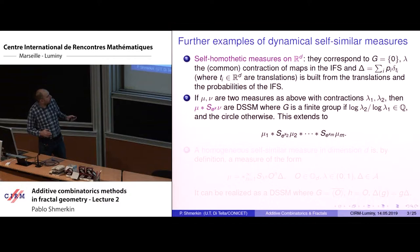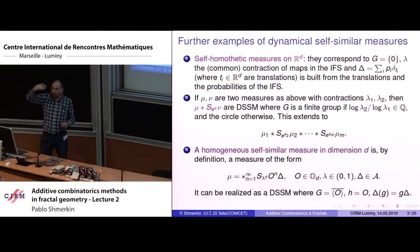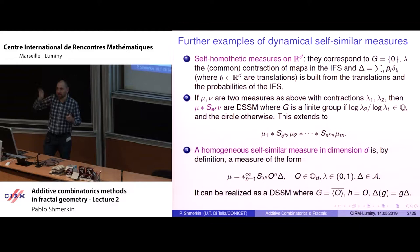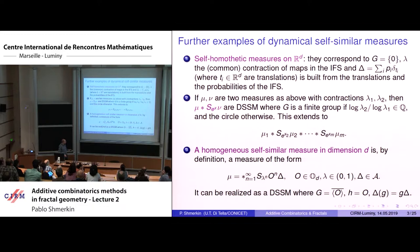In higher dimensions, we can also allow rotations. We can look at self-similar sets where we rotate at each step. From the point of view of iterated function systems, I'm scaling and rotating in the same way for all the maps — the only thing that changes is the translation. These measures can also be realized in the framework of dynamical self-similarity. This is a higher-dimensional example, not so relevant for today's talk, but it shows the flexibility of this construction.